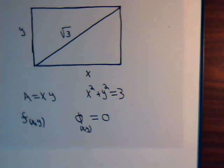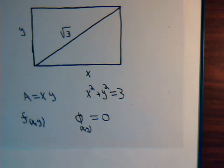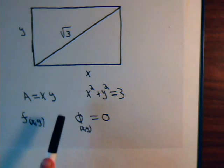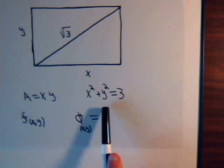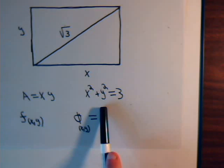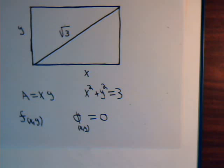In a previous video in this series, we had a relatively simple problem where we had a rectangle and its diagonal had to be equal to the square root of 3, and we wanted to maximize the area of the rectangle. We wanted to know what values of x and y would give us the maximum area. That problem was simple enough — we had the area function and a constraint. The constraint was helpful because we could solve for y easily, giving us the square root of 3 minus x squared. Substituting into the area expression gave us a function of one variable. Then we take the derivative with respect to x, set it equal to 0, and find our critical points.